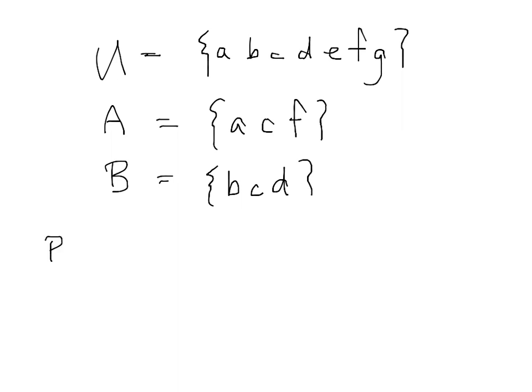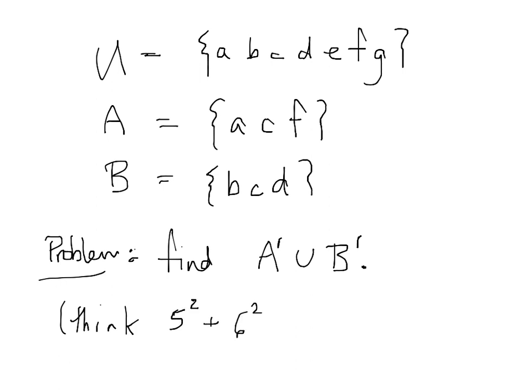Okay. So our problem is find A prime union B prime. So we're thinking like 5 squared plus 6 squared, which means that we have to find 5 squared and 6 squared first.